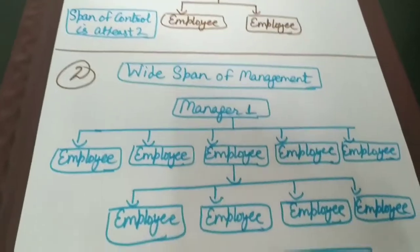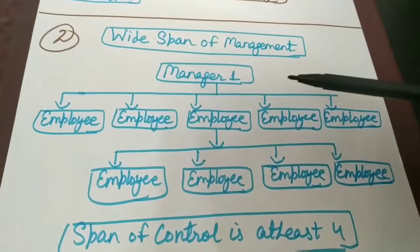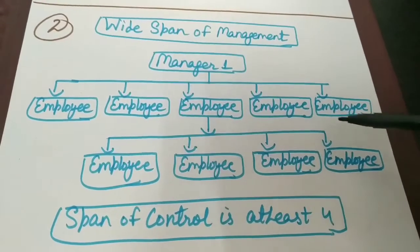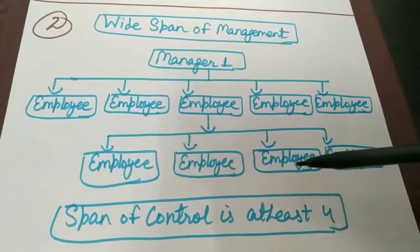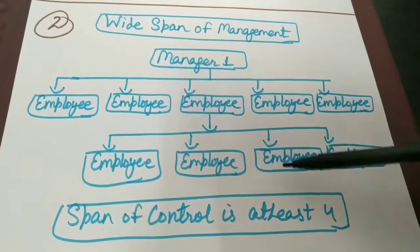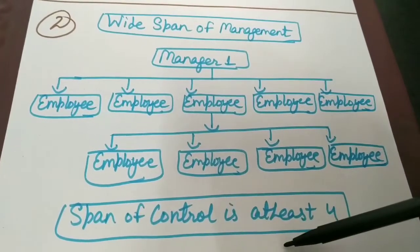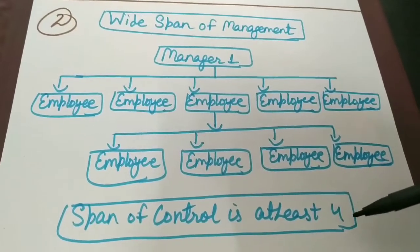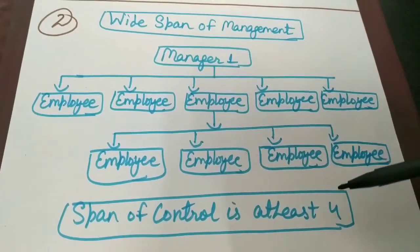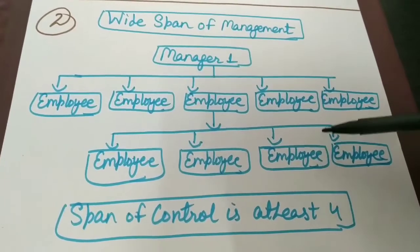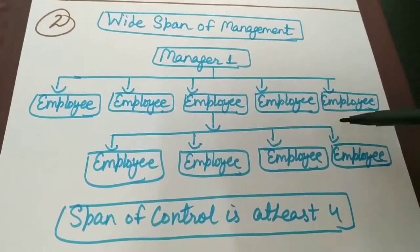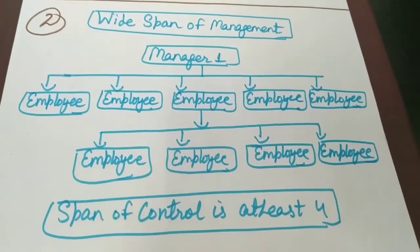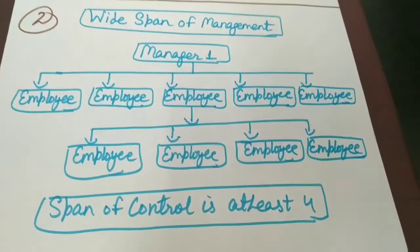Next we have wide span of management. Wide span of management mein, ek manager jo hai uske under five employees are working, and all these five employees are looking after four employees each who are working under them. Toh yahan pe span of control jo hai, that is at least four — kyunki har ek employee kam se kam chaar employees ke work ko look after kar raha hai. Toh this is called wide span of management. Ye ek organization ko flat organizational structure provide kerta hai.